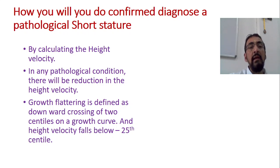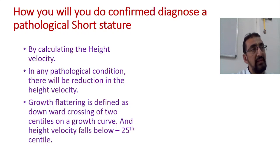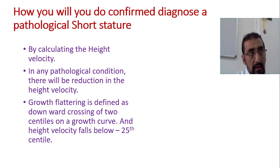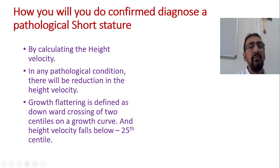To identify pathological short stature, we calculate height velocity — any pathological condition will show reduction in height velocity. Growth flattening is defined as downward crossing of two percentiles on a growth curve, and height velocity falling below the twenty-fifth percentile. Growth flattening means when you plot the height and it crosses downward by two percentiles on the growth chart, and height velocity falls below the twenty-fifth percentile.